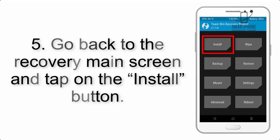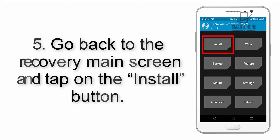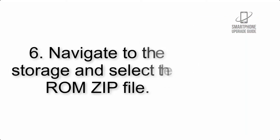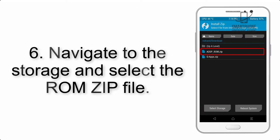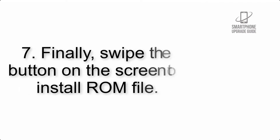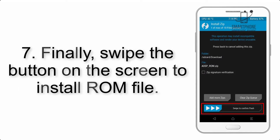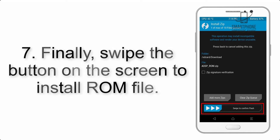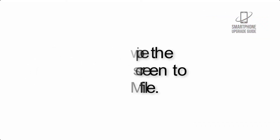Step 5: Go back to the recovery main screen and tap on the Install button. Step 6: Navigate to the storage and select the ROM zip file. Step 7: Finally, swipe the button on the screen to install the ROM file.